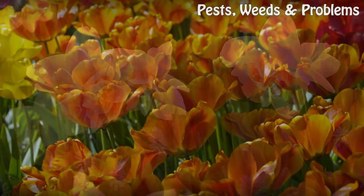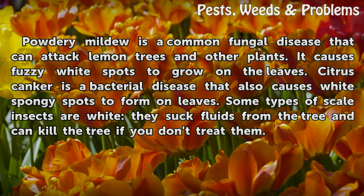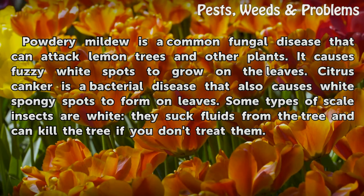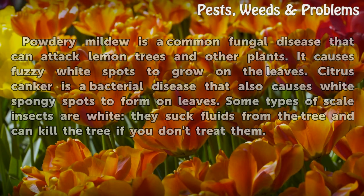Types of diseases and insects. Powdery mildew is a common fungal disease that can attack lemon trees and other plants. It causes fuzzy white spots to grow on the leaves. Citrus canker is a bacterial disease that also causes white spongy spots to form on leaves. Some types of scale insects are white; they suck fluids from the tree and can kill the tree if you don't treat them.